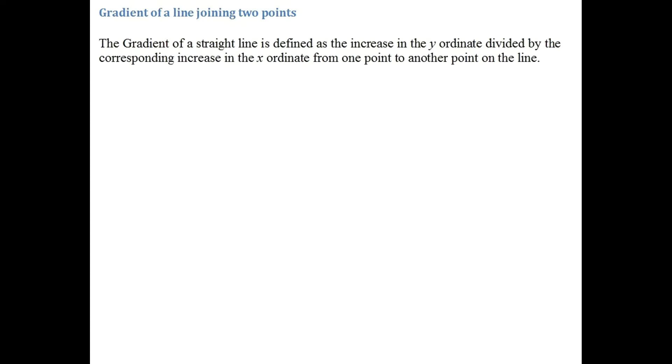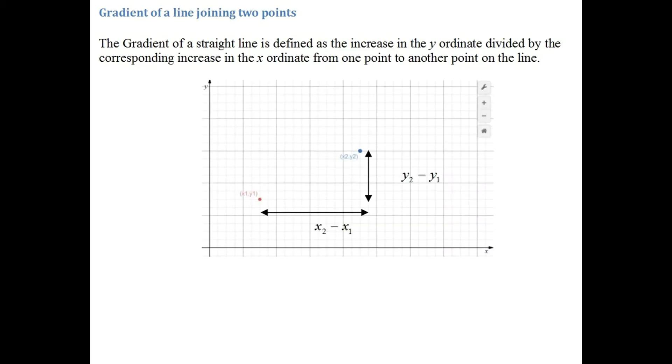Hi there. In this video I'm going to discuss how to work out the gradient of a straight line joining two points. Here's the definition for gradient: the gradient of a straight line is defined as the increase in y-ordinates divided by the corresponding increase in the x-ordinates from one point to another point on the line. I have a diagram over here.